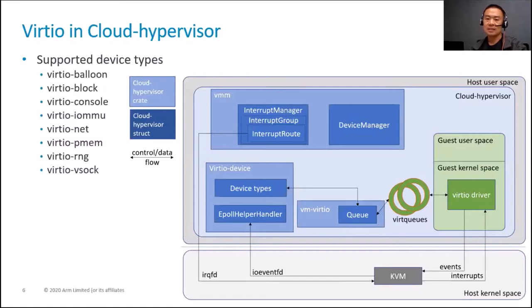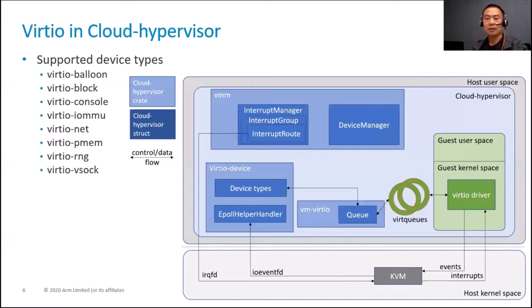This diagram depicts the workload of VirtIO emulation in Cloud Hypervisor. VMM VirtIO handles the queue model of virtqueues. Various device types are emulated in the VirtIO device crate. In the VMM crate, device manager manages all the devices. Notifications from the VirtIO driver in the guest kernel are carried by ioeventfd, handled by an epoll helper handler. The interrupt manager can inject interrupts into the guest via irqfd.